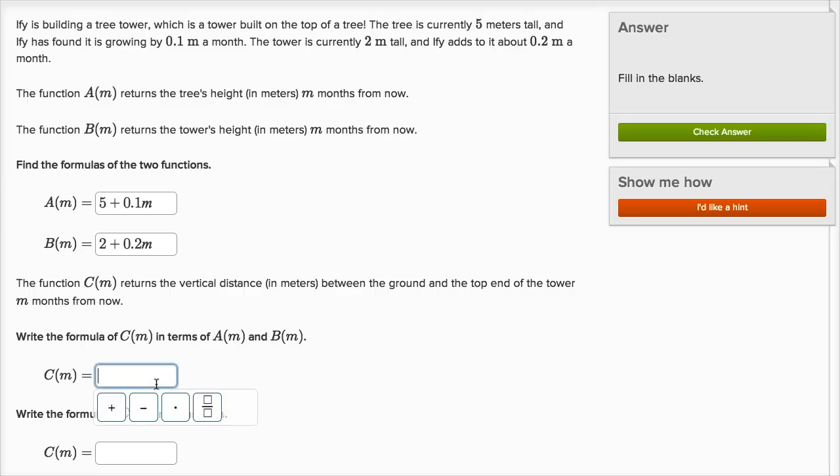Write the formula C of m in terms of A of m and B of m. Well the total height is going to be the height of the tree, which is A of m, plus the height of the tower, plus B of m. That's what C of m is going to be.